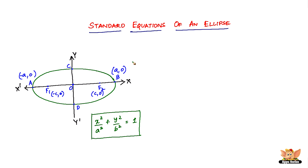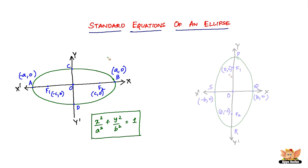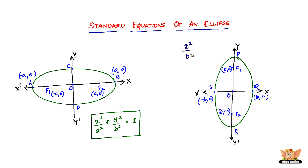Now let us look into the vertical form of an ellipse. Here we are with the ellipse that looks almost like an egg. The standard equation of this vertical ellipse is x squared divided by b squared plus y squared divided by a squared equals one. The only difference between the two equations is: for the horizontal it is x²/a² + y²/b² = 1, and for the vertical it is x²/b² + y²/a² = 1.